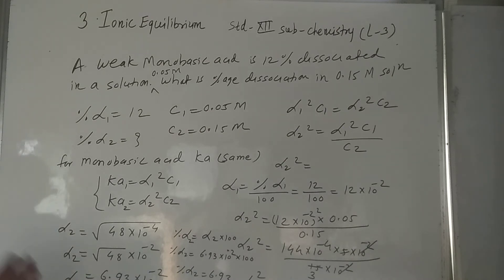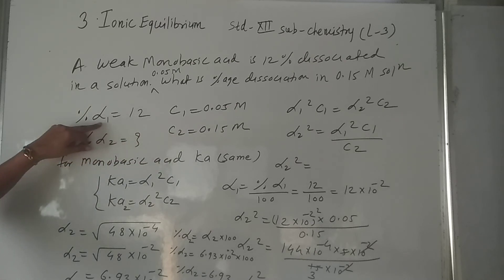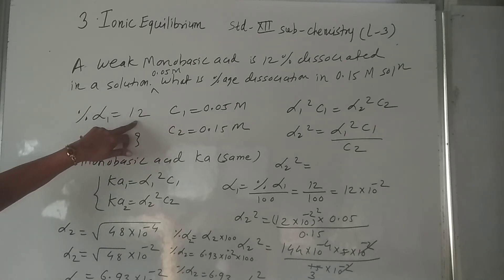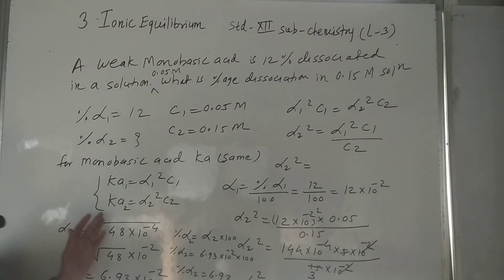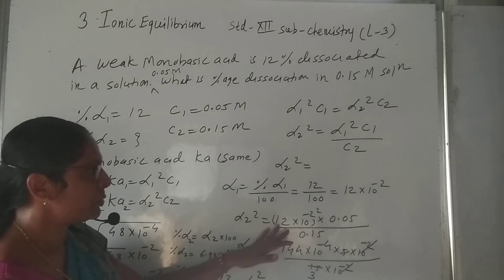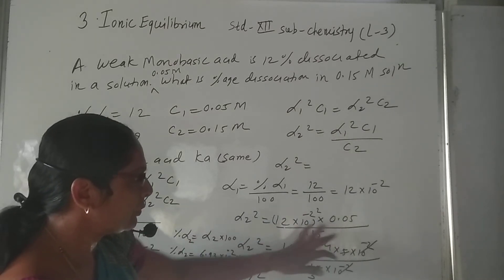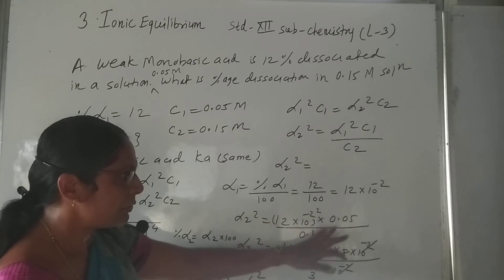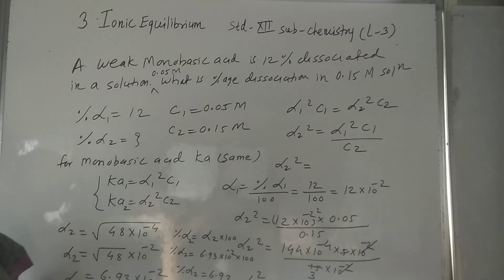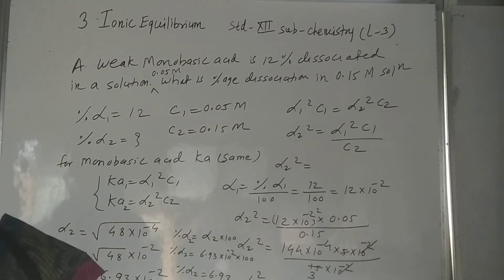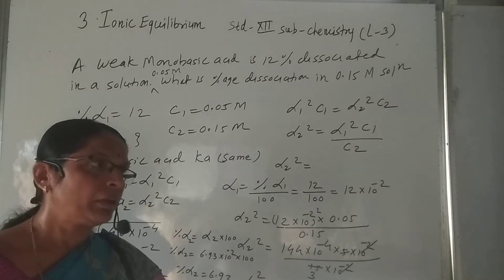When two concentrations are given and a percentage dissociation is given, we can find the percentage dissociation at the second concentration by comparing equations and substituting values carefully — taking care that the value placed is α₁² with C1 and C2. In today's lecture we discussed numerical solutions of Ostwald's dilution law. Thank you.